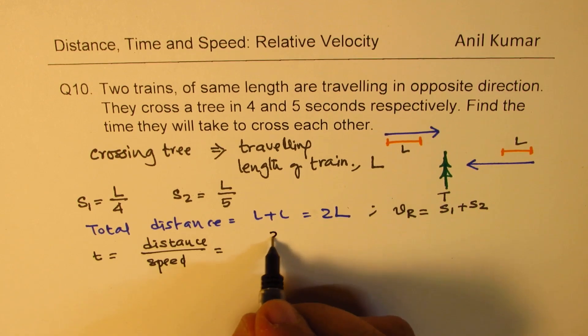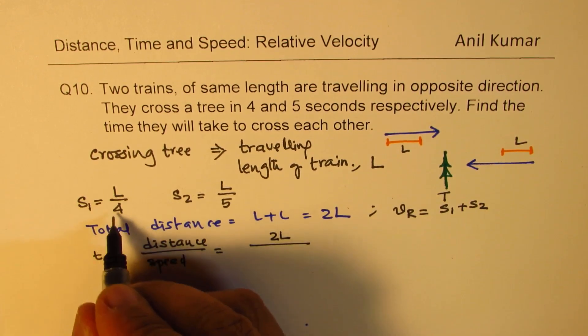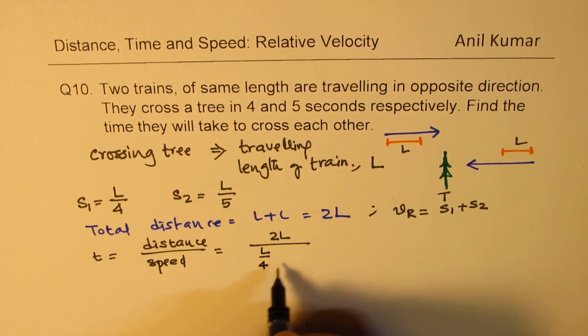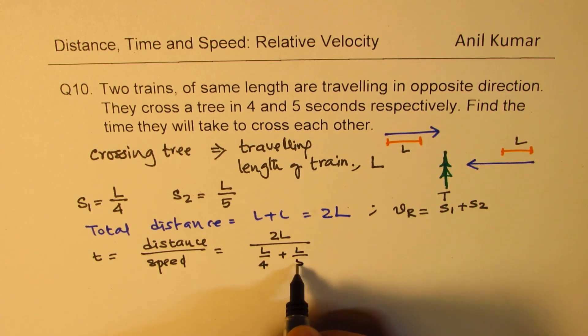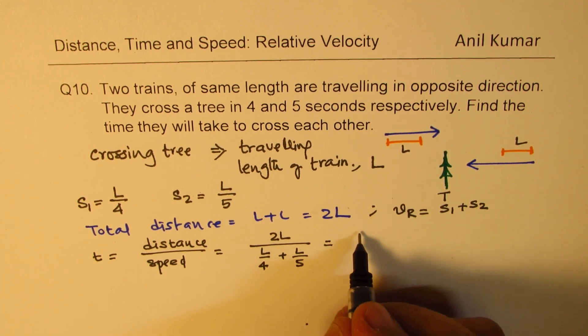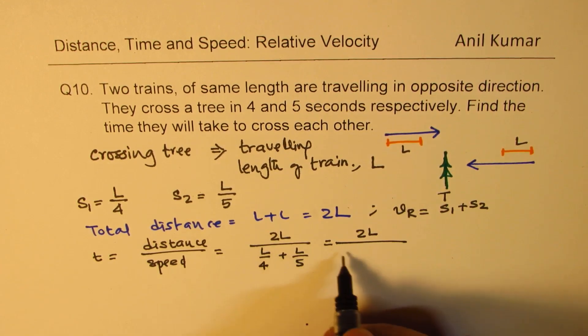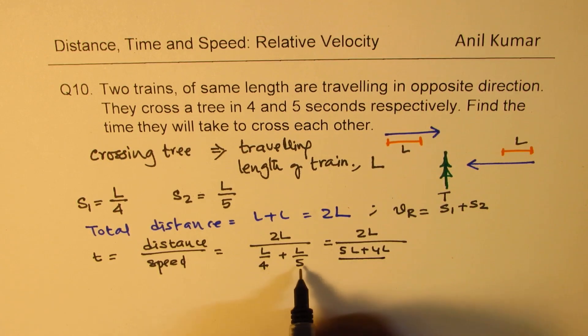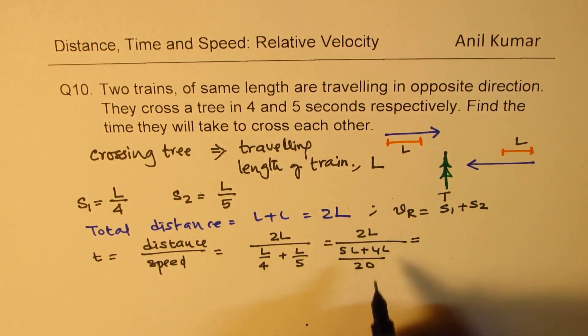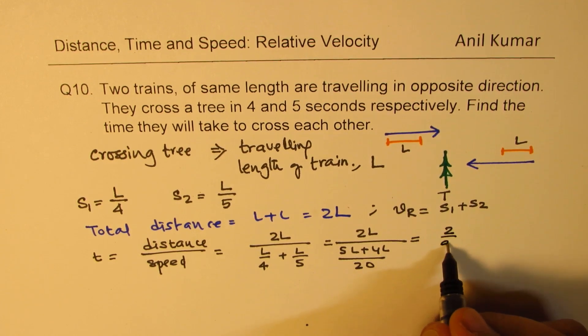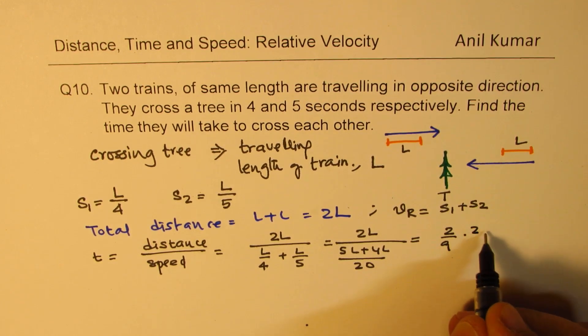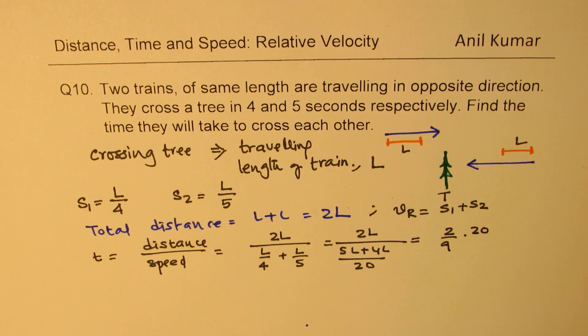So clearly, distance is twice L divided by sum of these two speeds, L over 4 plus L over 5. So that gives you twice L over 5L plus 4L over 5 times 4, which is 20. So L and L cancel, so we get 2 over 9 times 20.